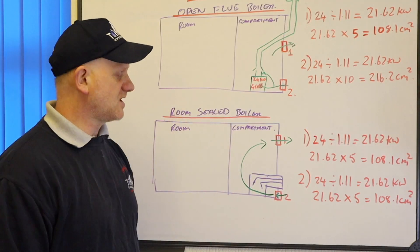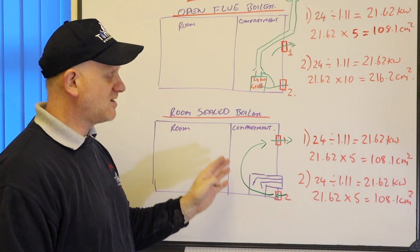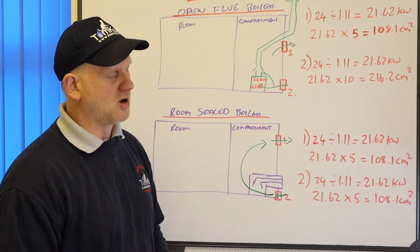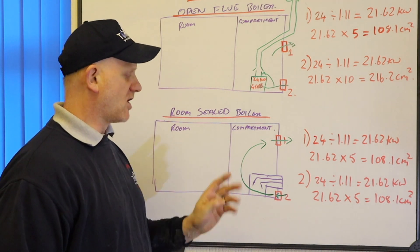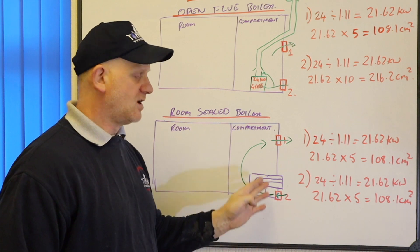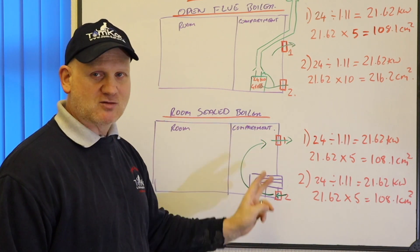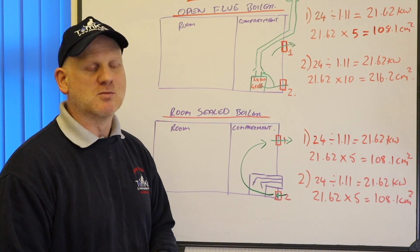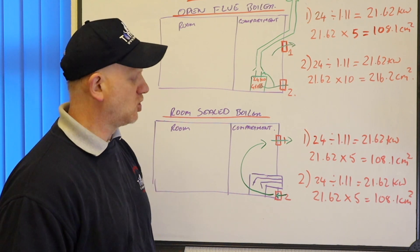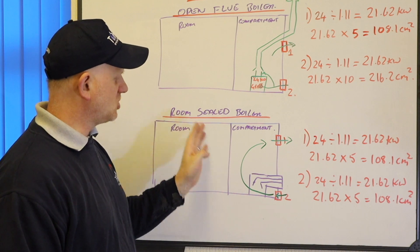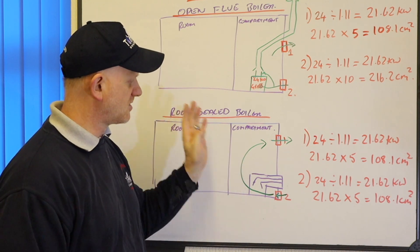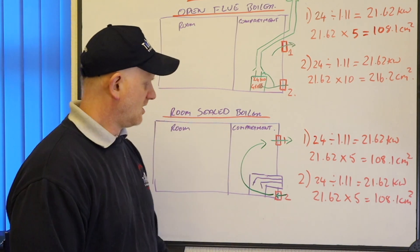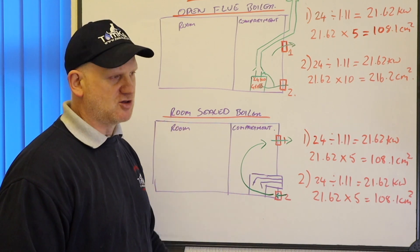So in this scenario here, we've got a room sealed boiler. It's a high water content boiler. That means it's got a cast iron heat exchanger. If they're low water content boilers, they don't normally need vents for cooling. But we've got a floor standing old cast iron heat exchanger boiler here. So it requires two vents coming direct from outside. So we've got 24 divided by 1.11 because it's a 24 kilowatt gross boiler, which is 21.62. 21.62 times 5 is 108.1. And they are the same for top and bottom because we don't need air for combustion. We just need air to cool the room and to cool the appliance. So that's compartment ventilation for room sealed appliances, high water content boilers, which require vents for cooling. Always check the manufacturer's instructions. We would also need a label on the door in this situation which says don't block the vents.